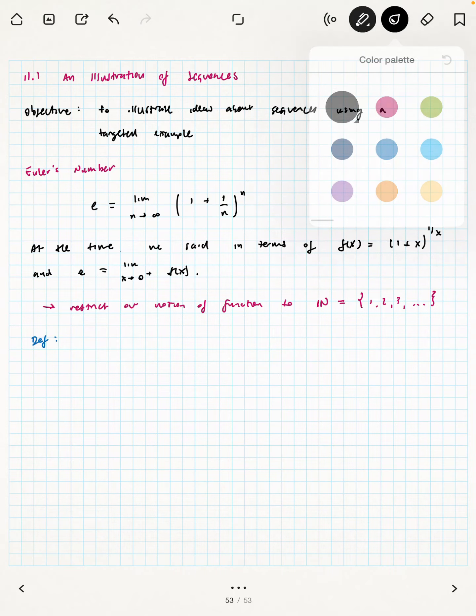that a sequence is an ordered list that's infinite, or more accurately, is a function on the natural numbers, rather than on the real numbers.